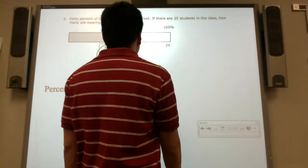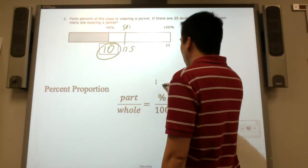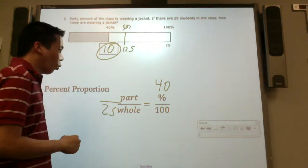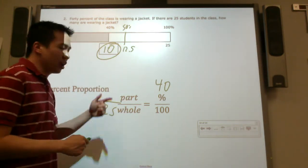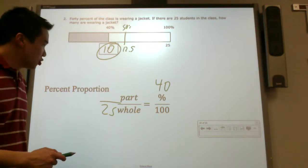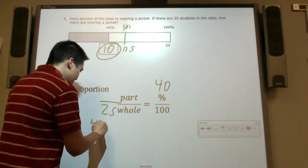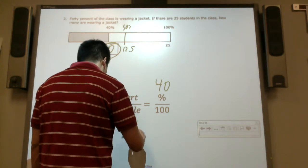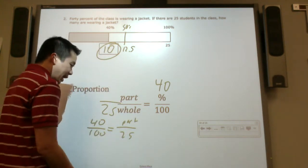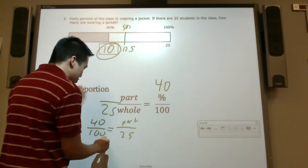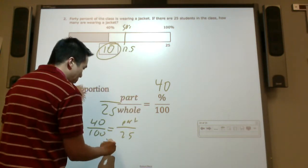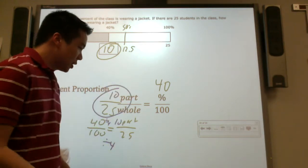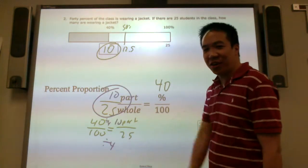Let me use my percent proportion. I know that was 40% of the whole class, which is 25 students, are wearing a jacket. What part of it is wearing it? I'm going to reverse this around again. You don't have to, but I think it helps when you reverse it around. Can 100 be broken down into 25? Oh, that is so much easier. Divide both numbers by 4, number 10 is the answer. So 10 students. Hey! I guessed correctly. Very nice.